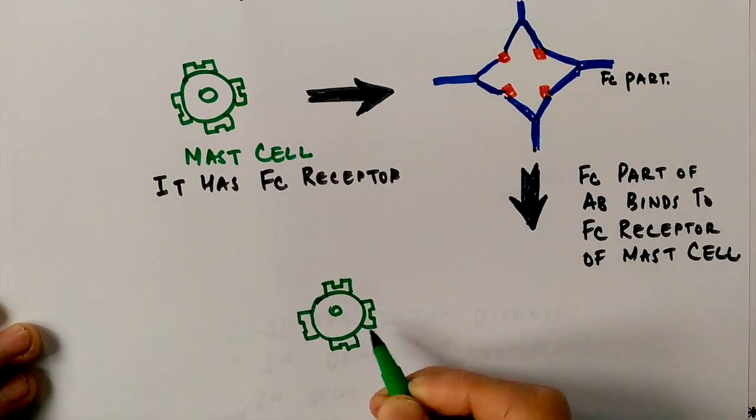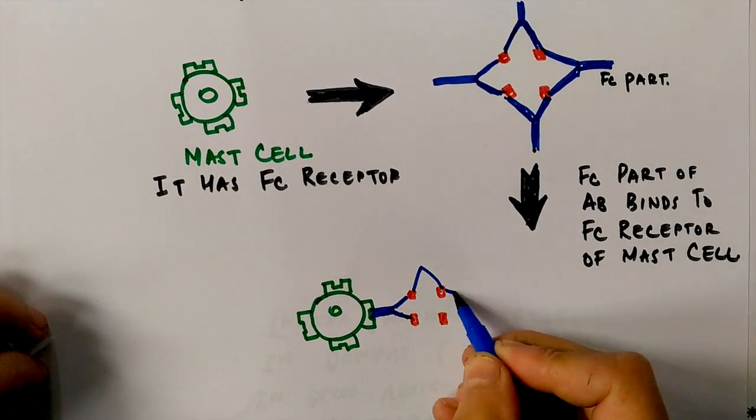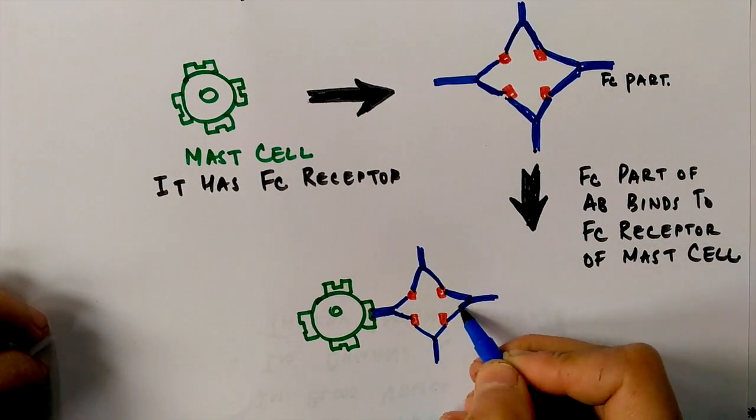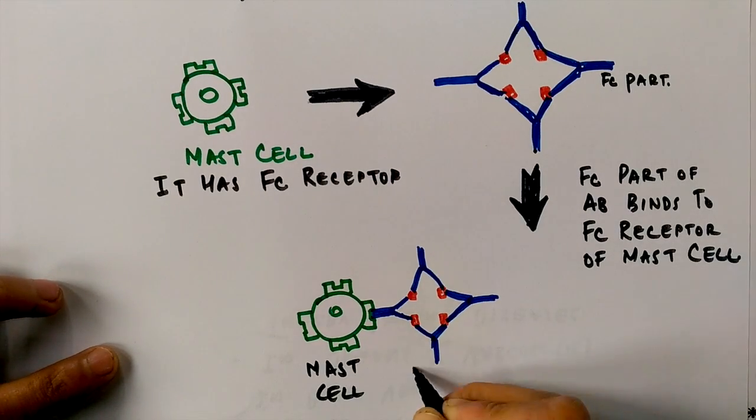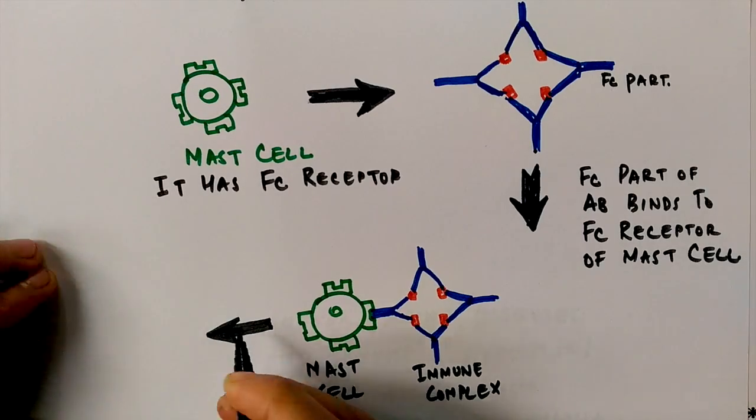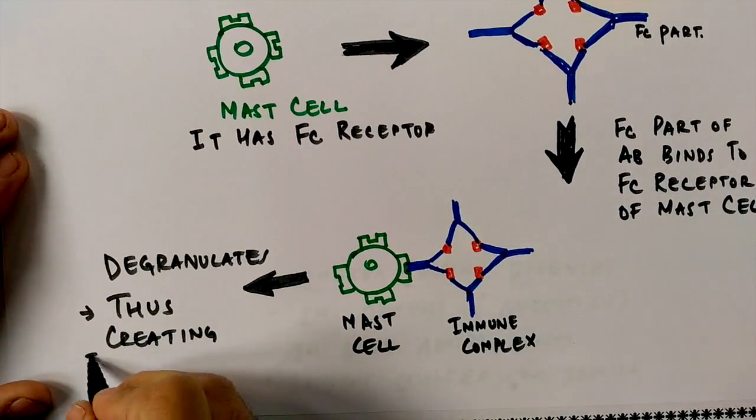As mast cell binds to the immune complex, there is an immediate degranulation of mast cell which releases antimicrobial cytotoxic molecules in the form of histamine, proteoglycans, serotonin, thereby causing an inflammatory response. So we call it hypersensitivity type 3.